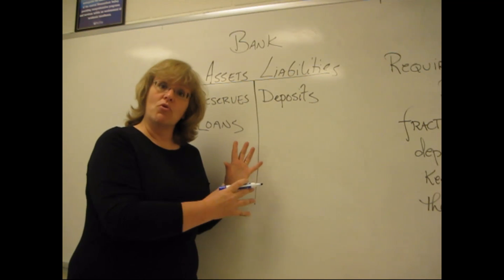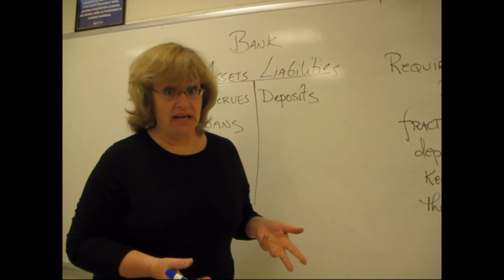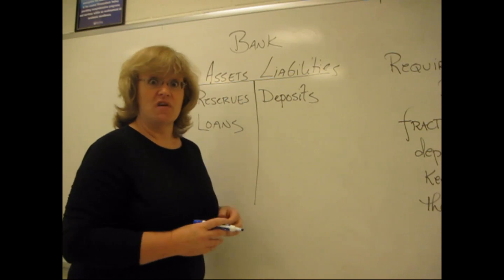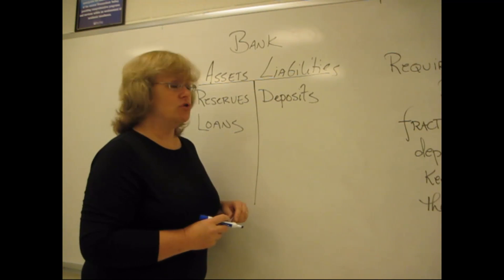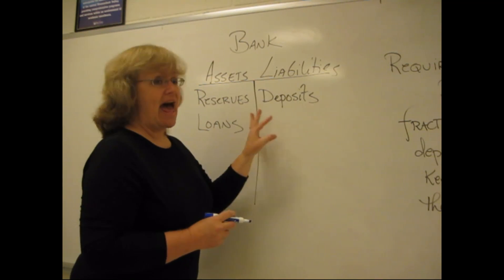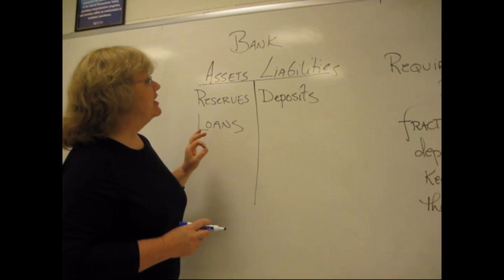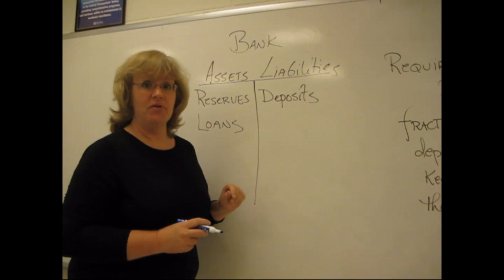I'm going to use the T-account framework to discuss multiple deposit creation and to show you how banks create money, the core of the process by which the Fed can affect what they do and control money supply. Banks have two main categories here that we're going to be concerned about, two main categories of financial instruments: assets and liabilities.